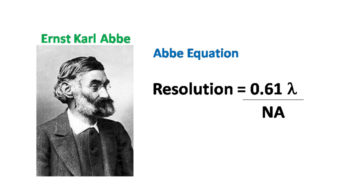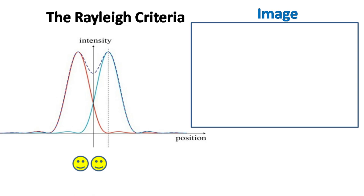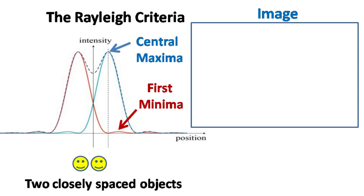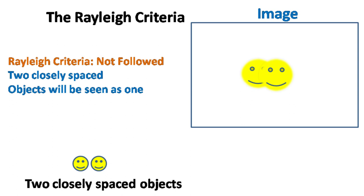The diffraction phenomenon also limits the ability of a microscope to see two closely spaced objects. The ability to distinguish between two closely spaced objects is given by Rayleigh's criteria, which states that in order to distinguish between two closely spaced objects, the central maxima of one should fall on the first order minima of the other. Otherwise, the two closely spaced objects will be seen as one object.